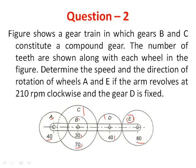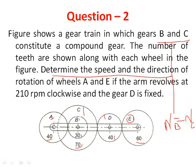Out of these gears, gear B and C form a compound drive, which means the speed of gear B and the speed of gear C are equal. The question requires us to find the speed and direction of gears A and E when the arm is rotating at 210 RPM clockwise and gear D is fixed.